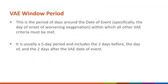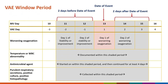The date of event defines the VAE window period — a period of time during which all event criteria must be met. It is typically five days and includes the date of event and the two days before and two days after. In this example, the date of event is mechanical ventilation day 13. The VAE window includes mechanical ventilation days 11 and 12 before and days 14 and 15 after. All other criteria used to meet IVAC and PVAP must occur during this window period.